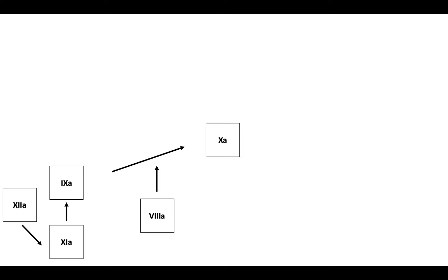Factor 10a acts in the presence of its cofactor, factor 5a, to activate prothrombin, or factor 2, to factor 2a or thrombin. Finally, thrombin cleaves fibrinogen to fibrin.